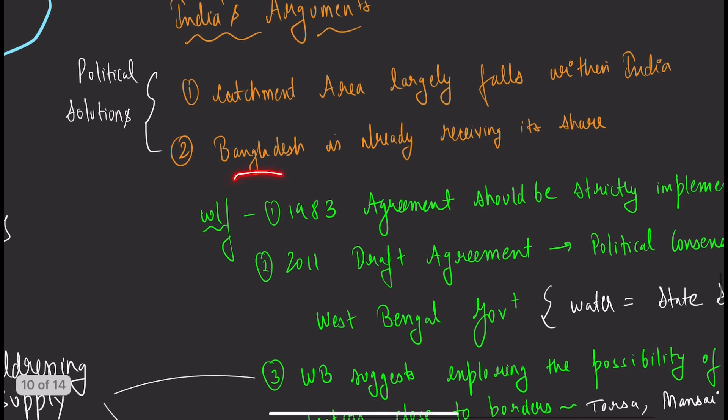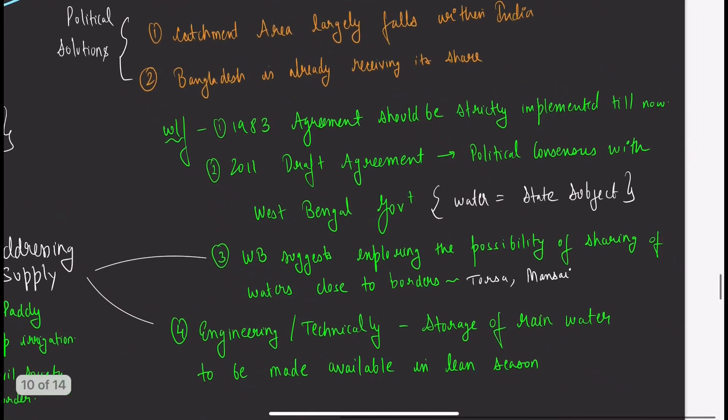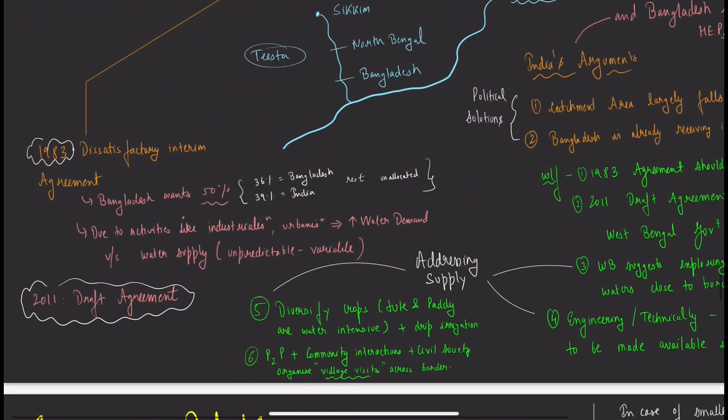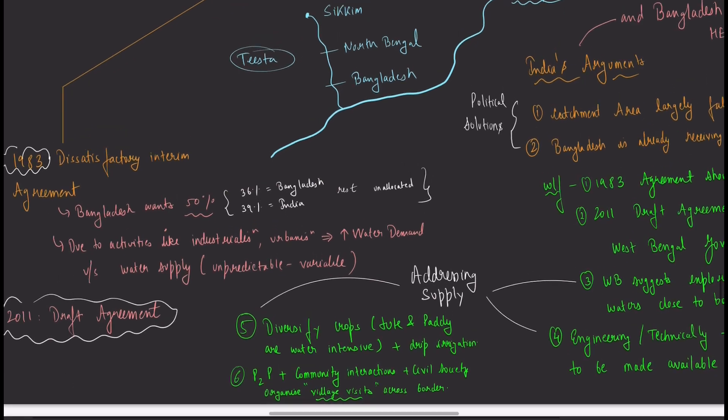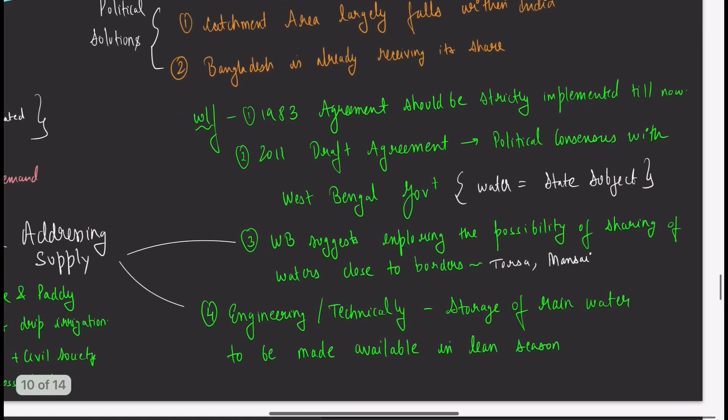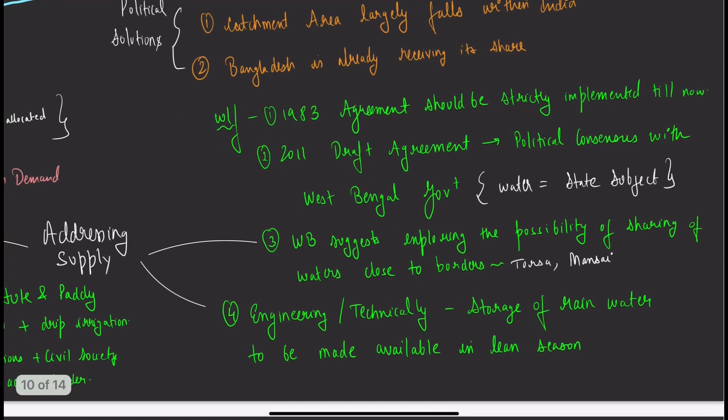India's argument is that the catchment area—where the river basin and all tributaries and distributaries are located—largely falls within India. Bangladesh is already receiving its share. The way forward is to strictly implement the 1983 agreement: give 36%, keep 39%, and allocate the rest judiciously instead of wasting it.